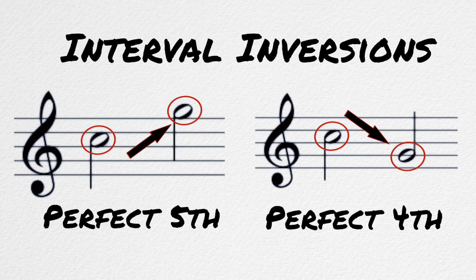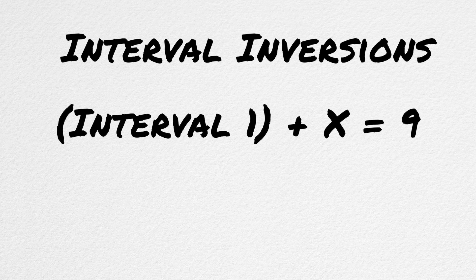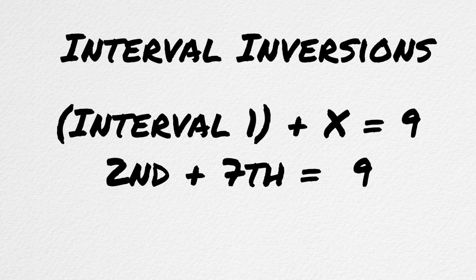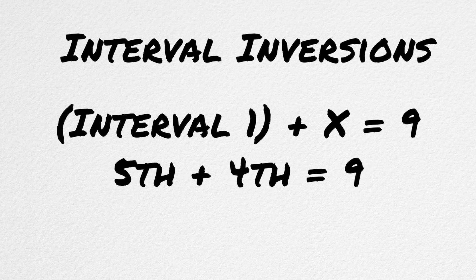Anytime an interval is inverted, the number of that interval plus the new number will add up to nine. So for example, the inversion of a second will always be a seventh, because two plus seven equals nine. The inverse of a fifth is a fourth, because five plus four equals nine.